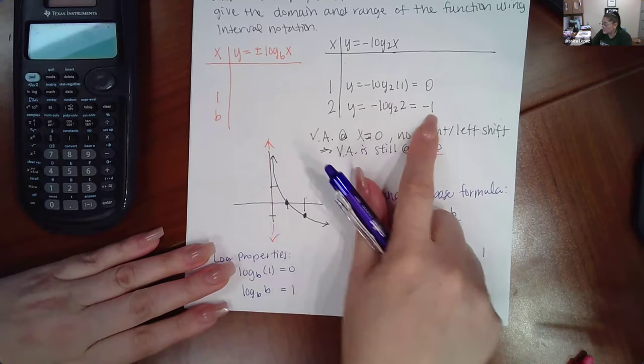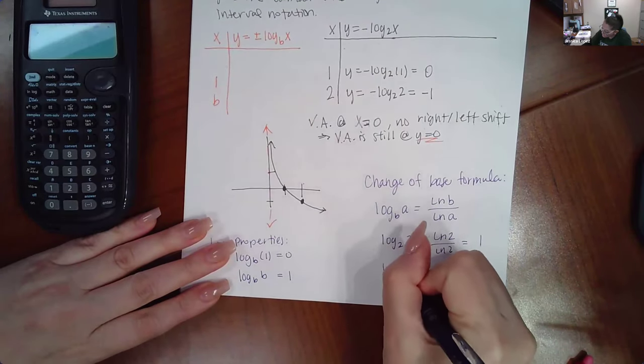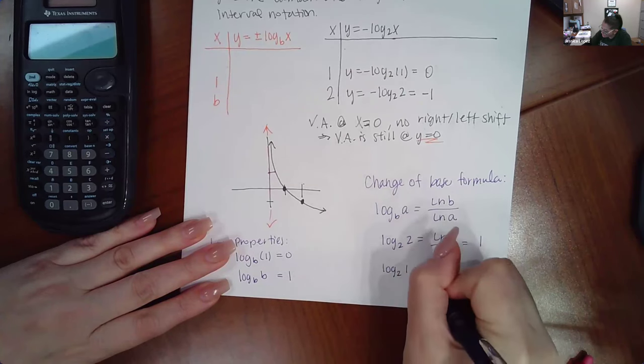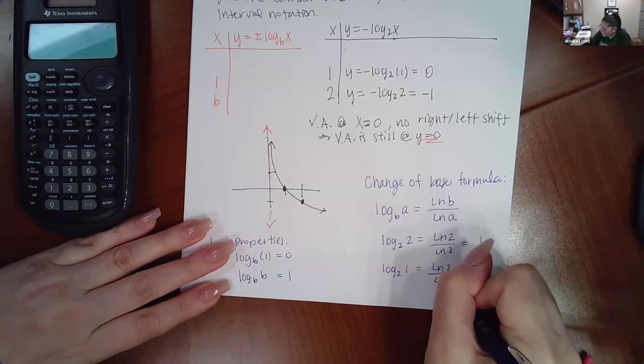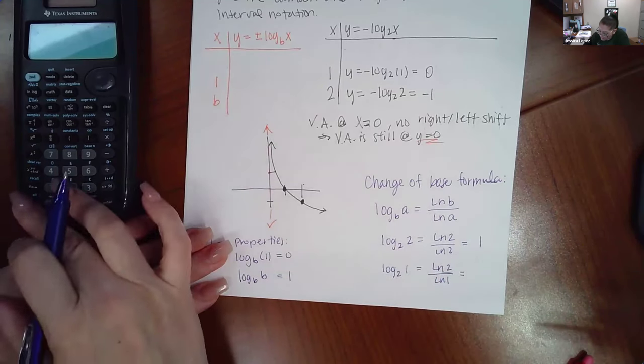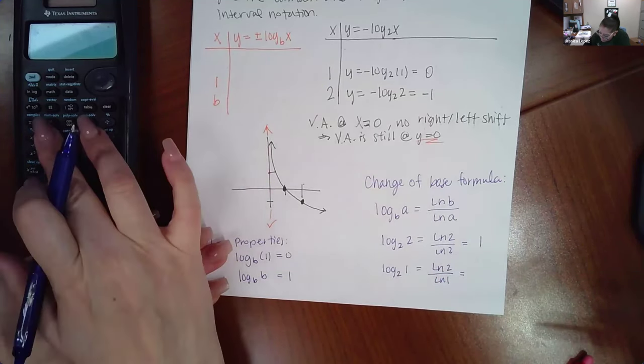And if it's negative, then that's why it's negative one. Similarly, if I wanted to do log base two of one, that would be ln of two over ln of one. And I think you get an error there.